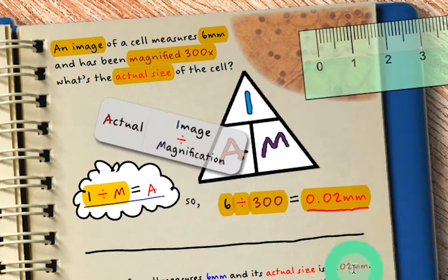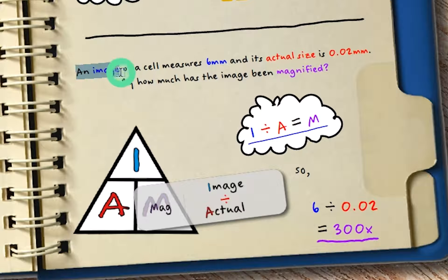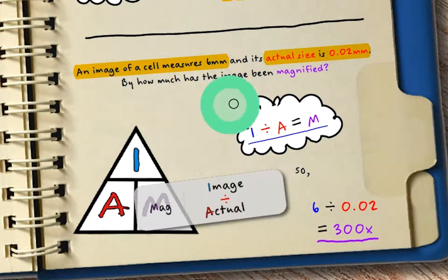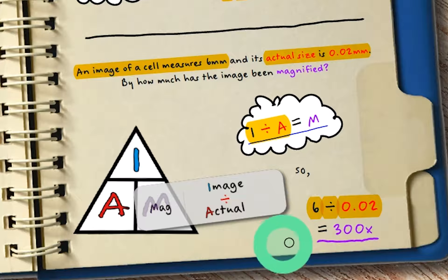Finally, we may be asked to work out the magnification. So if you're given the image size which in this case measures 6 millimeters, and you're also given its actual size which is 0.02 millimeters, by how much has that image been magnified? So here we'll cover over magnification because that's what we're looking for, and we're left with image divided by actual. So we know we have an image size of 6 millimeters, so we have 6 divided by the actual size of 0.02, which equals a 300 times magnification.